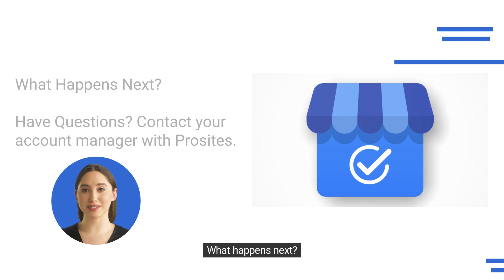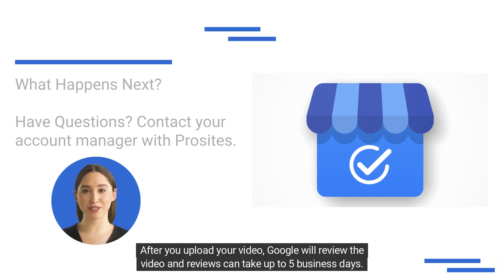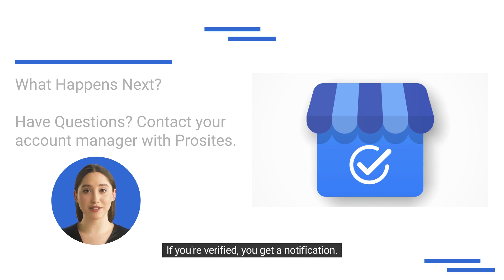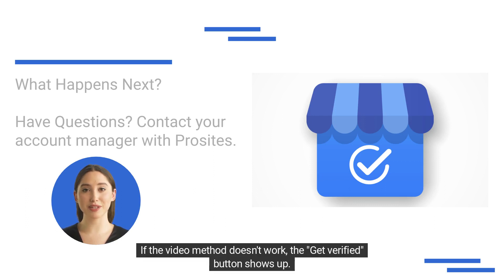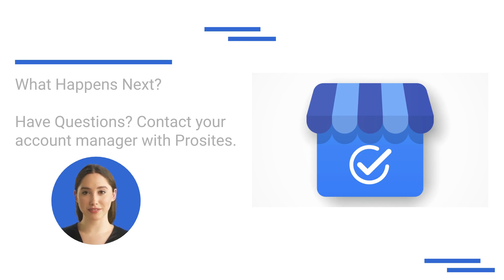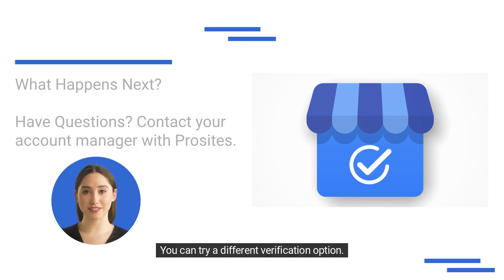What happens next? After you upload your video, Google will review it and reviews can take up to five business days. If you're verified, you'll receive a notification. If the video method doesn't work, the Get Verified button will reappear and you can try a different verification option.